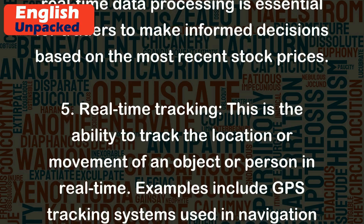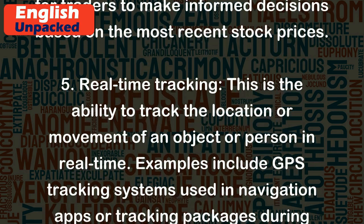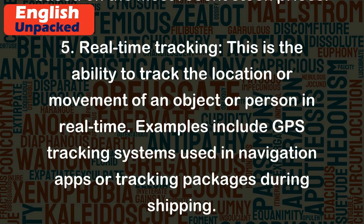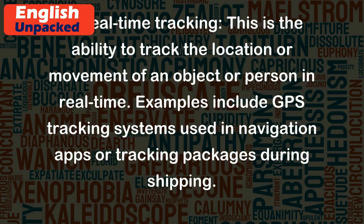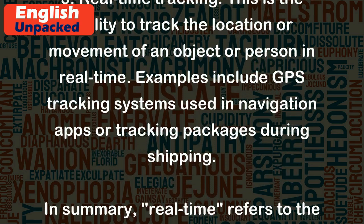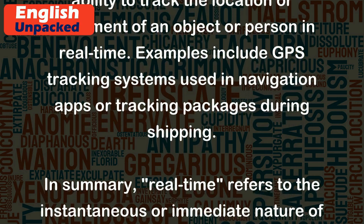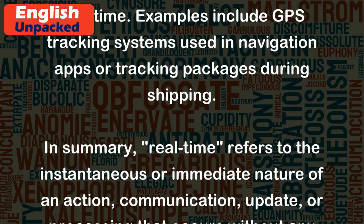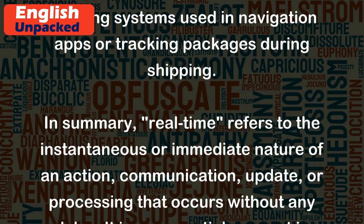5. Real-time Tracking: This is the ability to track the location or movement of an object or person in real-time. Examples include GPS tracking systems used in navigation apps or tracking packages during shipping.